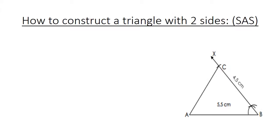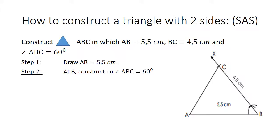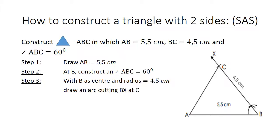How to construct a triangle with two sides. Construct triangle ABC in which AB equals five point five centimeters, BC equals four point five centimeters, and angle ABC equals sixty degrees. Step one: draw AB equals five point five centimeters. Step two: at B, construct angle ABC equals sixty degrees. Step three: with B as center and radius four point five centimeters, draw an arc cutting BX at C. Step four: join AC.